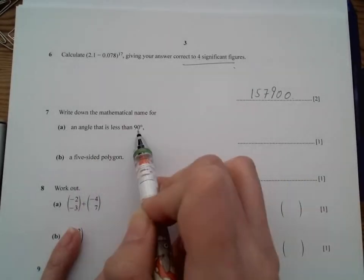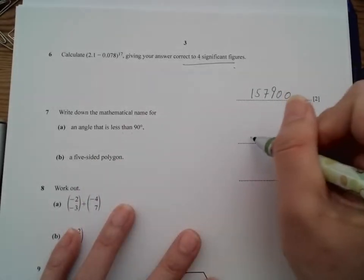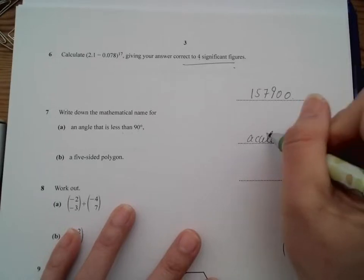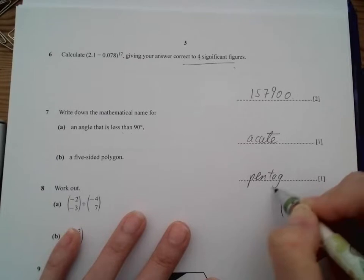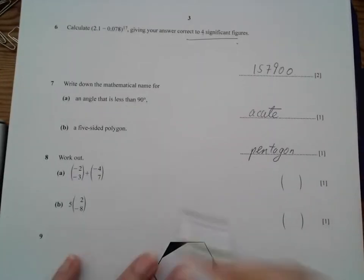Write down the mathematical name: 90 degrees, less than 90 degrees is an acute angle. And a five-sided polygon is a pentagon.